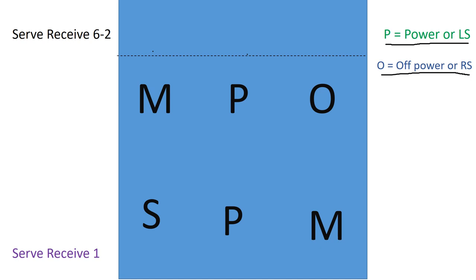So in this first rotation what's going to happen here is our setter is going to push up. And they're going to be pushing up the middle like that. Now these four people that remain are going to become the four people that are on serve receive.